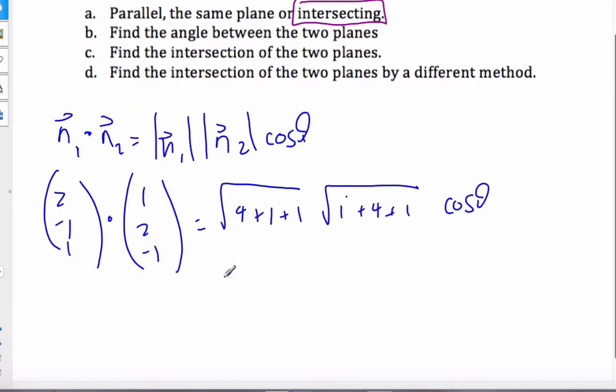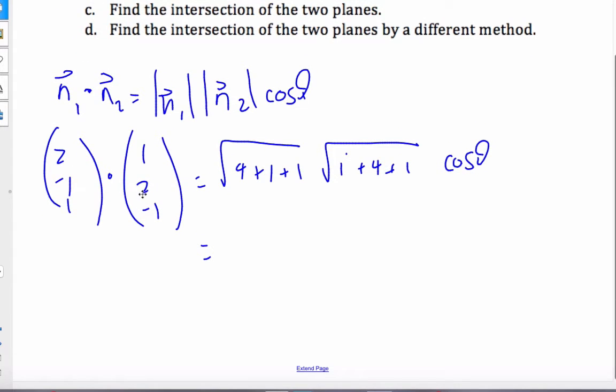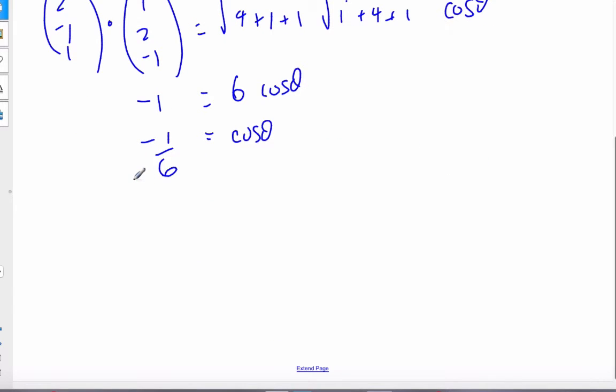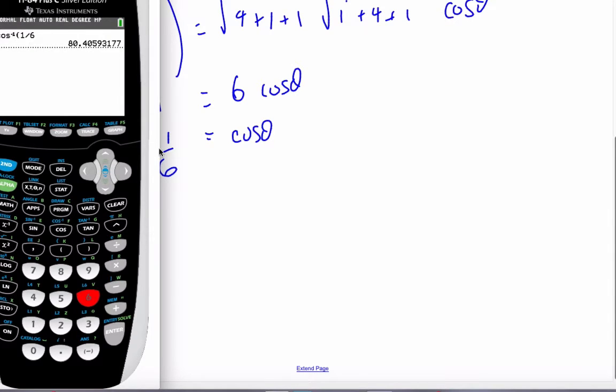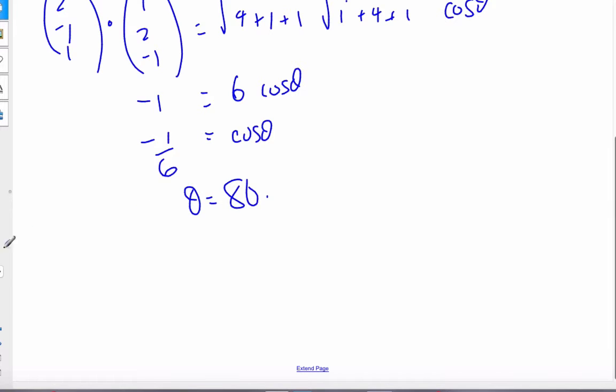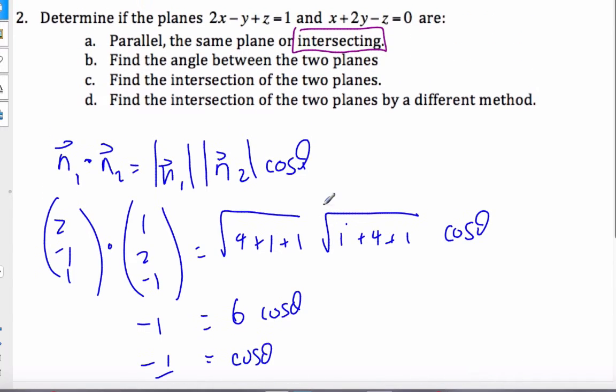Continuing through, I get 2 minus 2 is 0, 0 minus 1, which gives me 6 cosine theta. So cosine theta equals -1/6. That will be an obtuse angle. I typically want the acute angle, so I go cosine inverse 1/6 and the angle is 80.4 degrees, the acute angle between the planes.